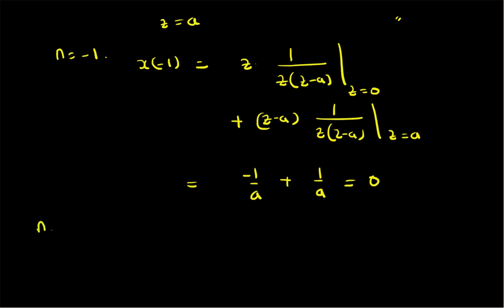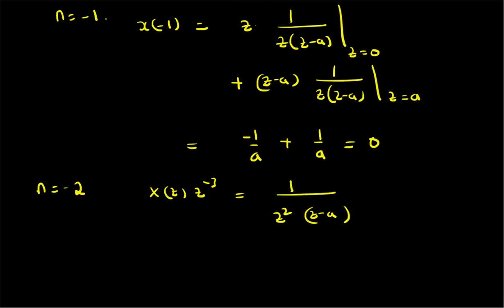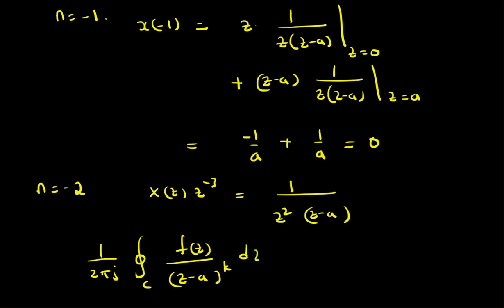Now let us look at n = -2. The function X(z)·z^(n-1), with n-1 = -3, becomes 1/(z²·(z - a)). Since we have multiple poles — z² in the denominator means a repeated pole at the origin — we must use the formula for the closed contour integral: (1/2πj)∮_C f(z)/(z - a)^k dz = (1/(k-1)!)·d^(k-1)/dz^(k-1)[f(z)] evaluated at z = a.